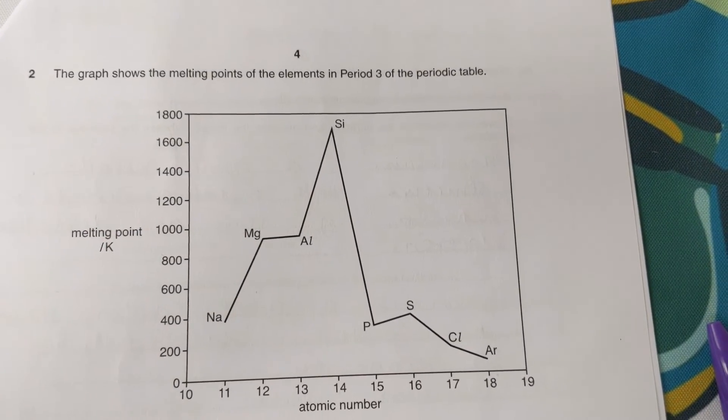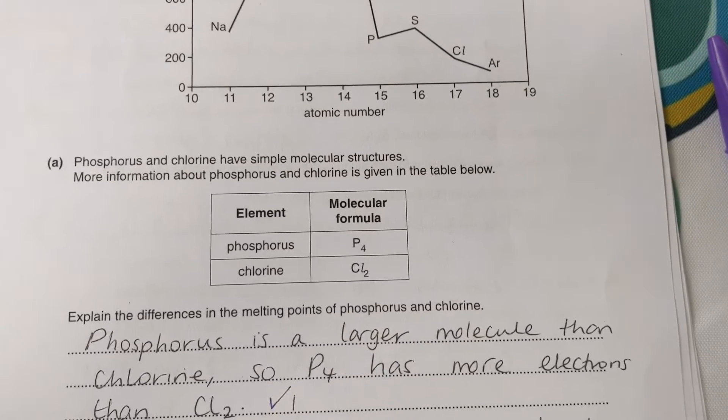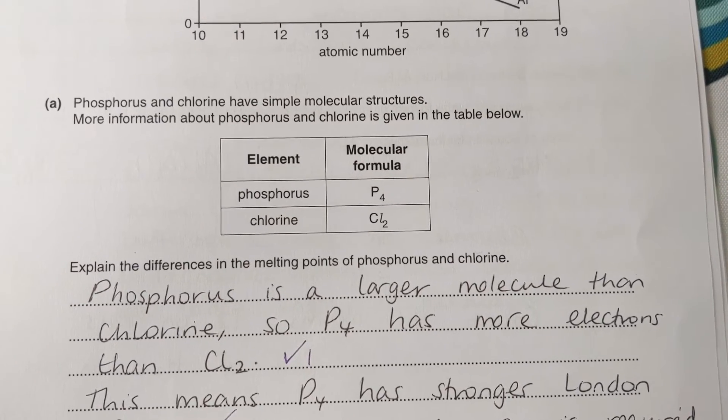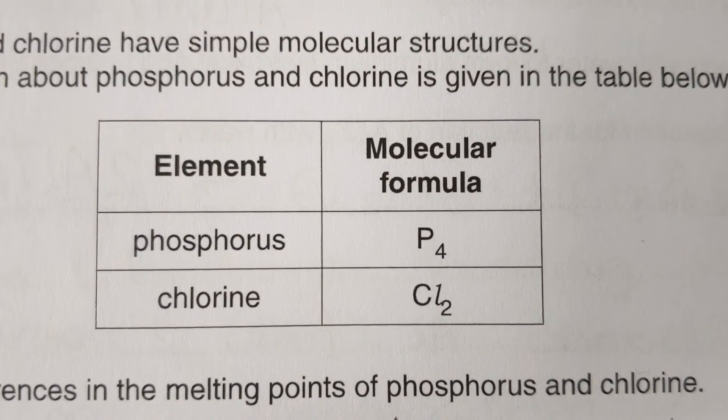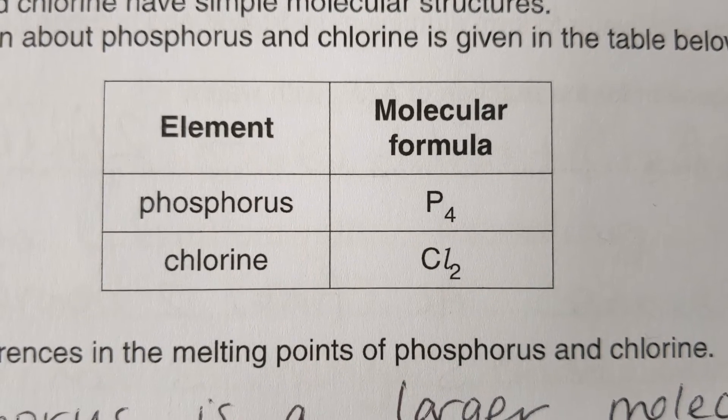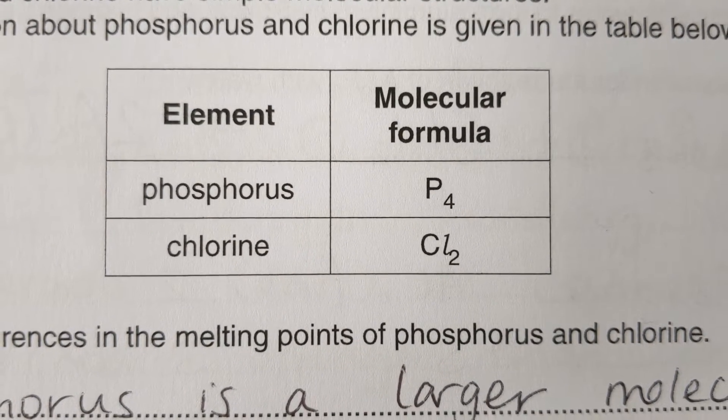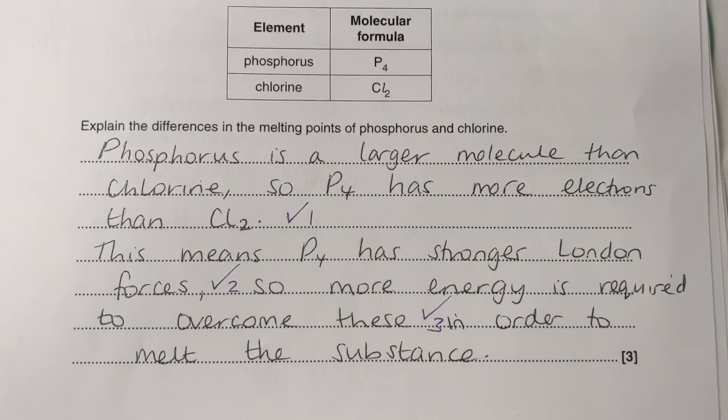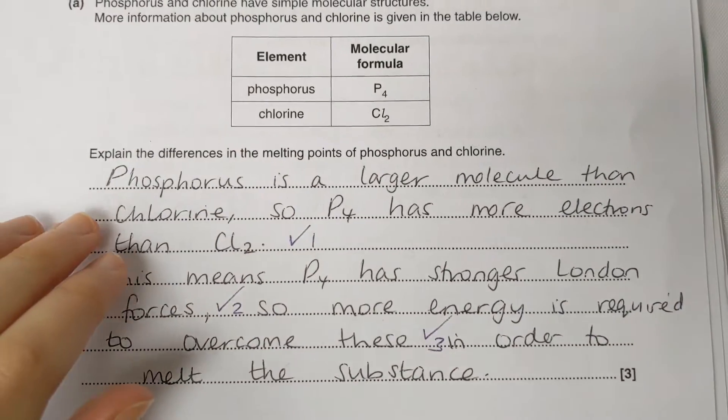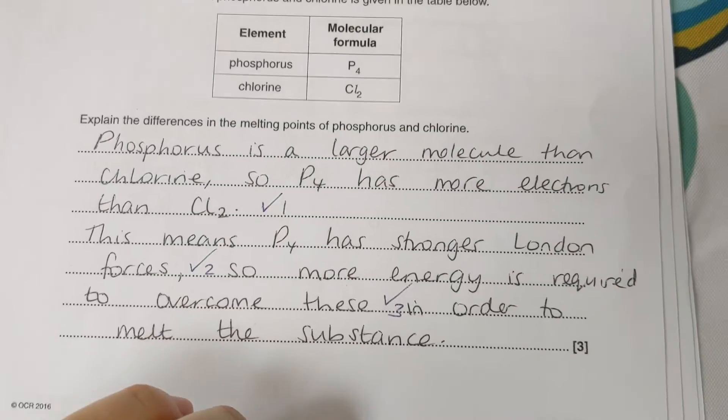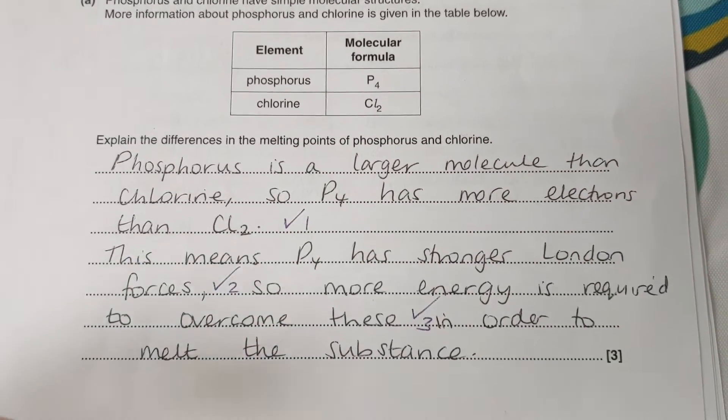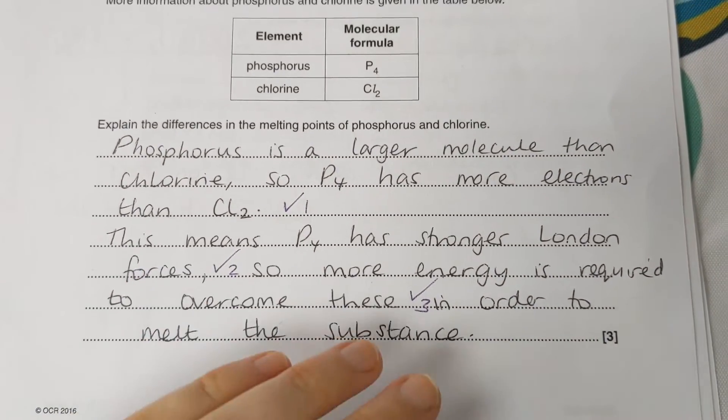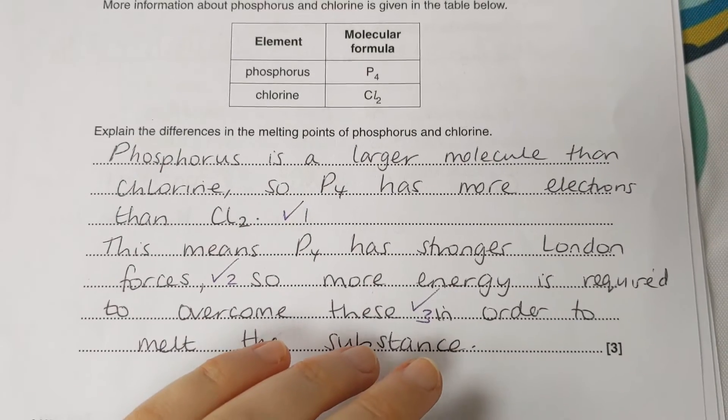This next question we've got a graph showing melting points across period three. The question is asking us about phosphorus and chlorine and to explain the difference in melting point. Now if you look here, phosphorus and chlorine, phosphorus is a bigger molecule. There's four phosphorus atoms, whereas in chlorine there's just two chlorine atoms. So our answer is based on that and number of electrons. So we're going to say phosphorus is a larger molecule than chlorine, therefore it has more electrons than chlorine. This means we have bigger or stronger induced dipoles or stronger London forces, so more energy is required to overcome these forces in phosphorus.